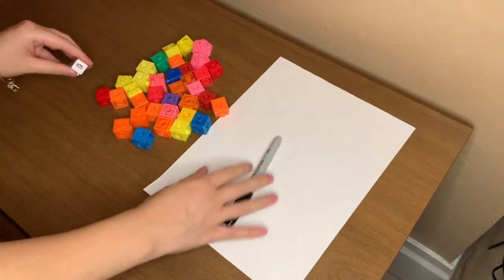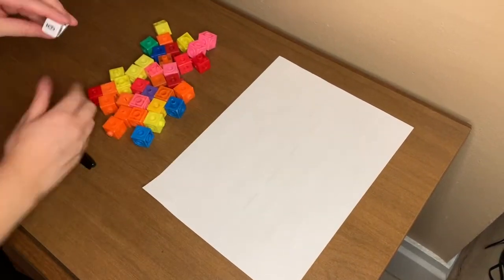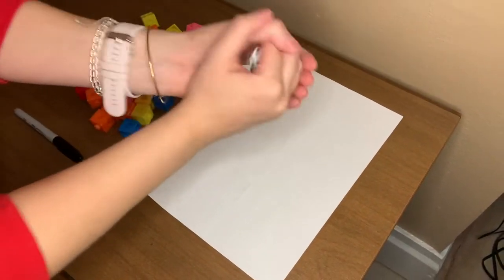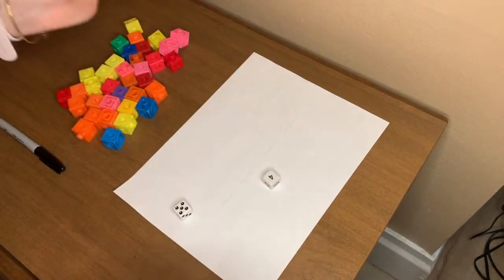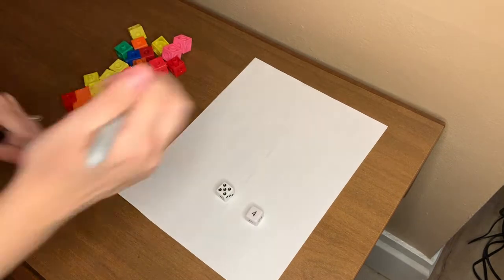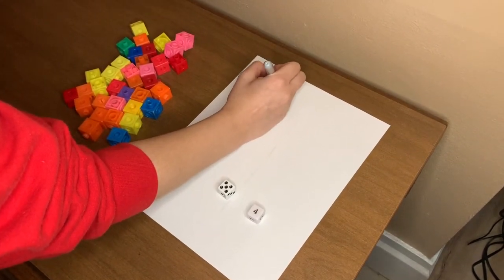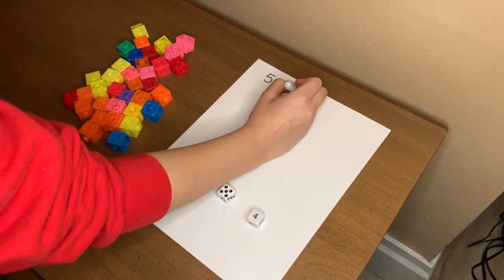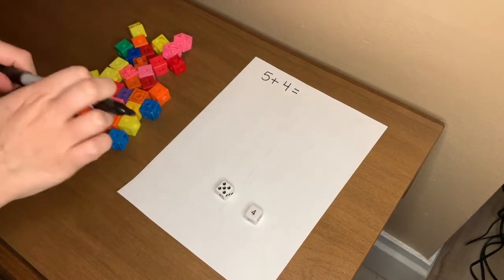You're going to take your dice and roll them. So I'm going to shake, shake, shake, and drop. Oh, I got five and four, so I'm going to add five plus four equals, and I'm going to find out my answer by building: one, two, three, four, five. Plus four: one, two, three...